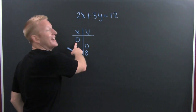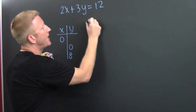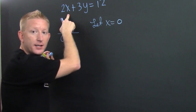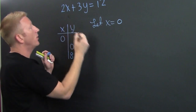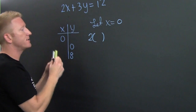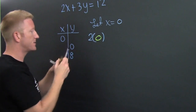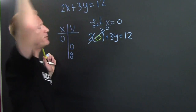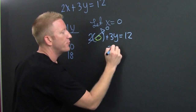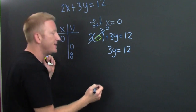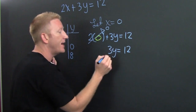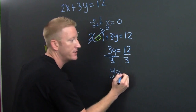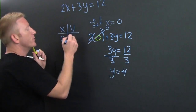We want to know the y value that corresponds when x is 0. So we're going to let x equal 0 and plug it in. My new x is 0, so 2 times 0 plus 3y is 12. Zero is the killer — it wipes out that term. And then I have 3y is 12. Divide both sides by 3, and y turns out to be 4. So that's the correspondence relationship.